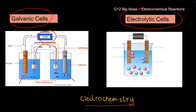The electrolytic cell is the other way around. We classify it by saying that electrical energy is converted into chemical potential energy. So the external energy source drives the reaction. The things that are the same: we have electrodes, we have electrolytes — you can see the liquid here, the aqueous solution — we have electrolytes in both of them.